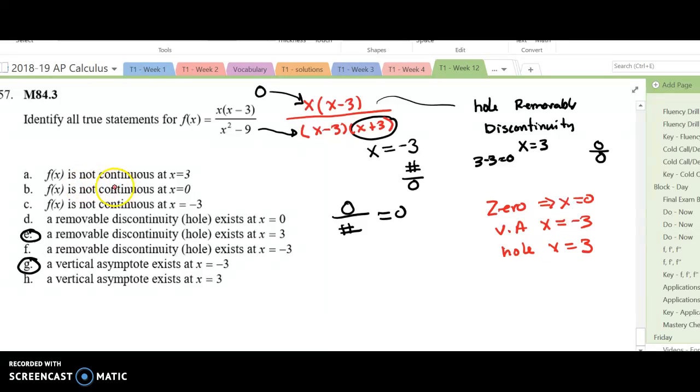You are asked for when this function is not continuous. But we're not continuous where we have a hole and we're not continuous where we have a vertical asymptote. So these two cases were not continuous and so we would also choose 3 and negative 3.